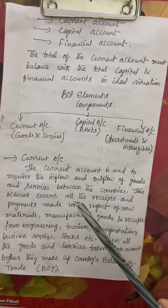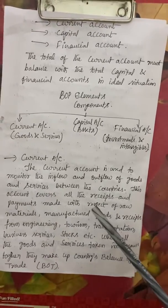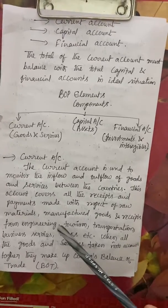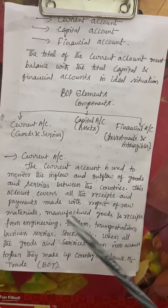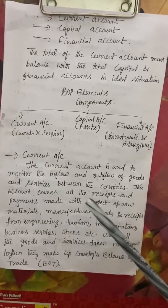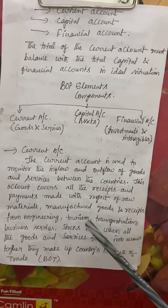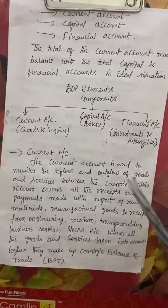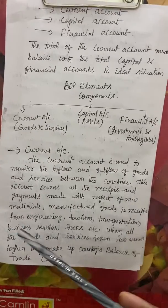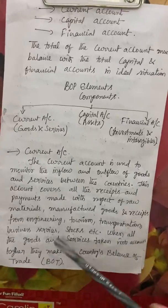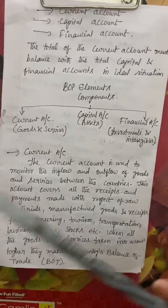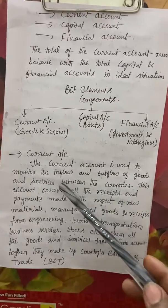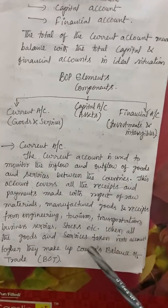Not only tangibles, but intangibles are also taken into account — services like engineering, tourism, transportation, and business services. Many such services are rendered by Indians, and at the same time we take services from the rest of the world. Whatever receipts and payments arise through these transactions are all recorded in the current account.